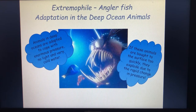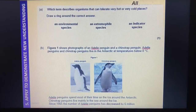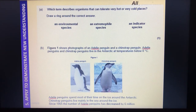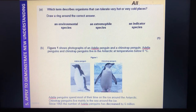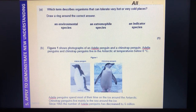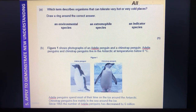We've got an exam question: 'Which term describes organisms that can tolerate very hot or very cold places?' We've got environmental species, extremophile species, or indicator species. The answer is extremophile species.